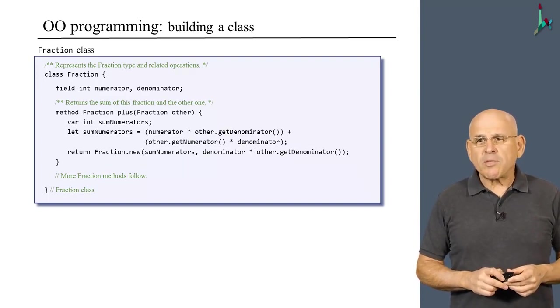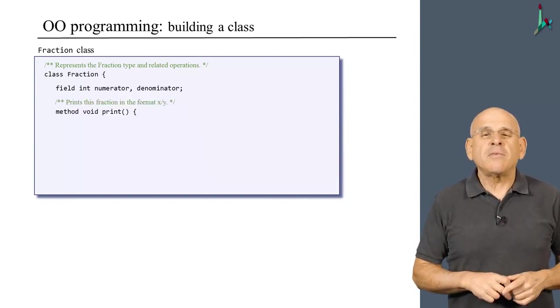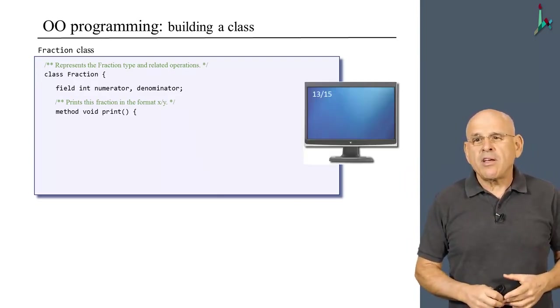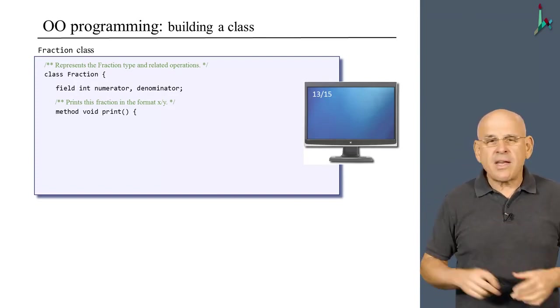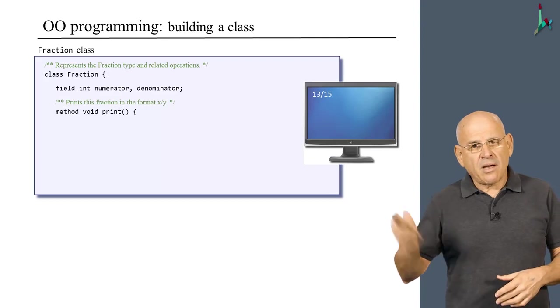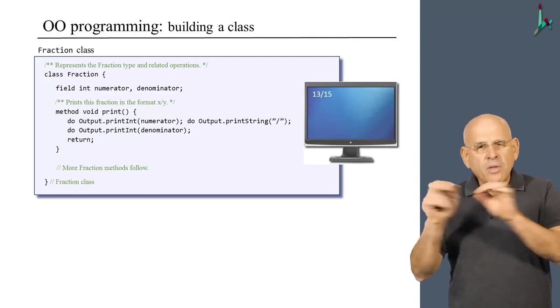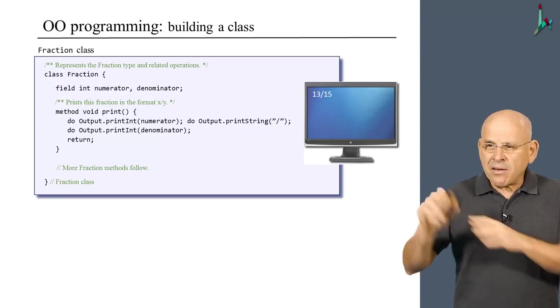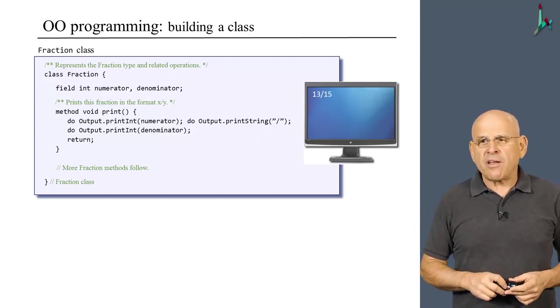All right, the next thing that I want to explore is the print method, which prints the current object on the screen. Of course, we don't know what is the current object, so 13 over 15 is just an example. Whatever object you will give this method, it will print it in this nice format. And the logic is trivial. It prints the numerator, it prints a slash, it prints a denominator, and that's it. I'm putting two statements in the same line in order to save slide space in other slides, so don't worry about it. And, of course, once again, I can add more fraction methods here if I want.